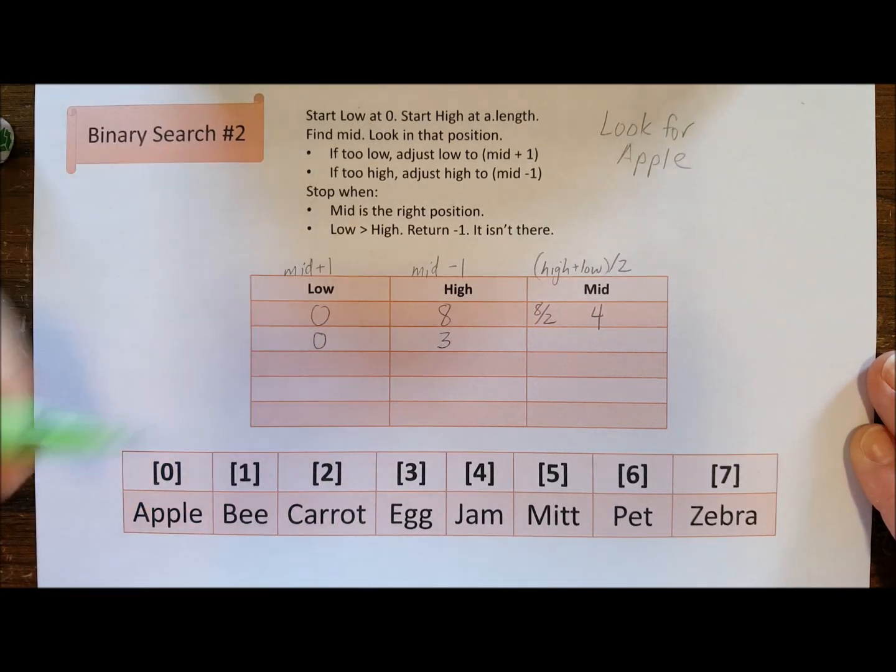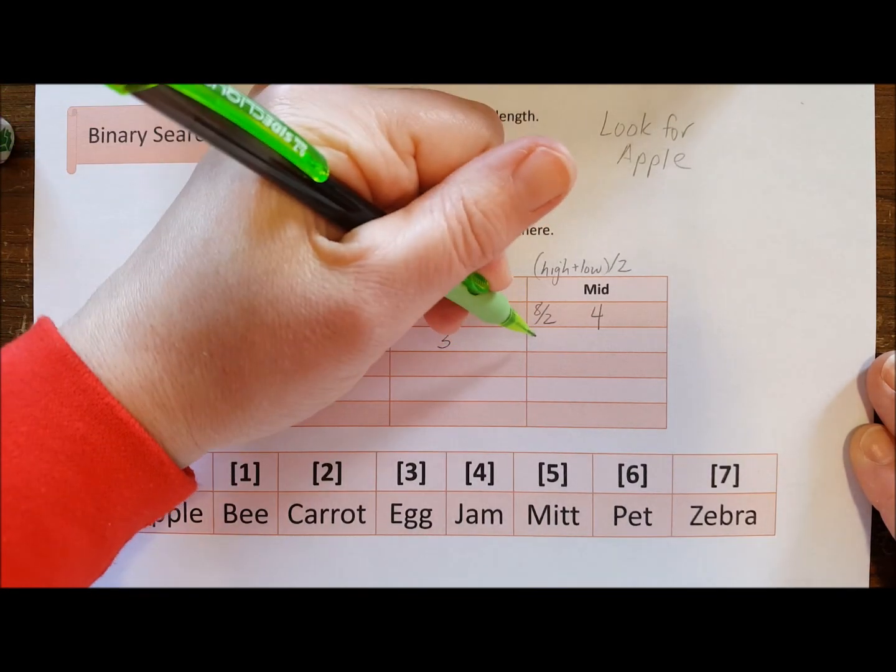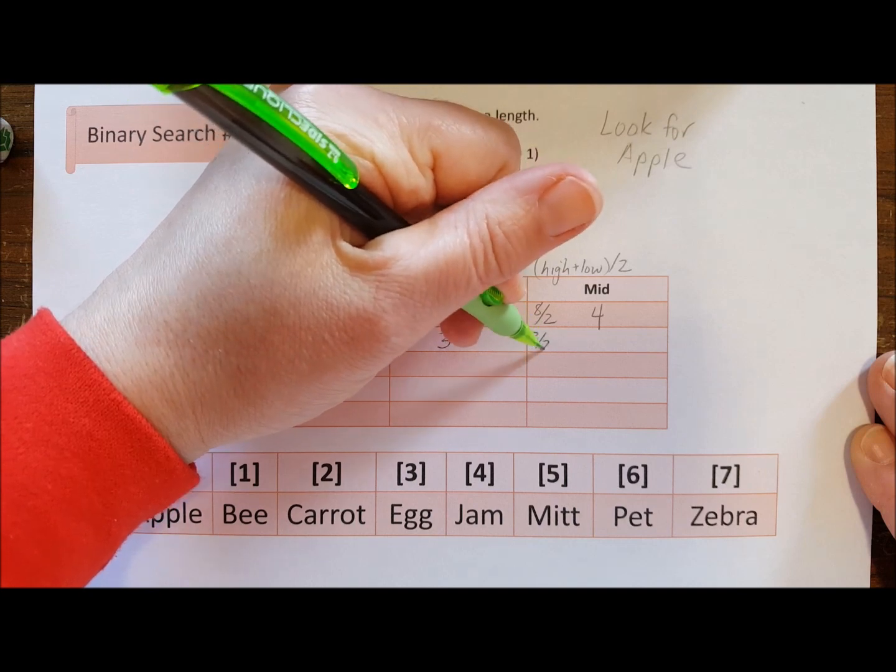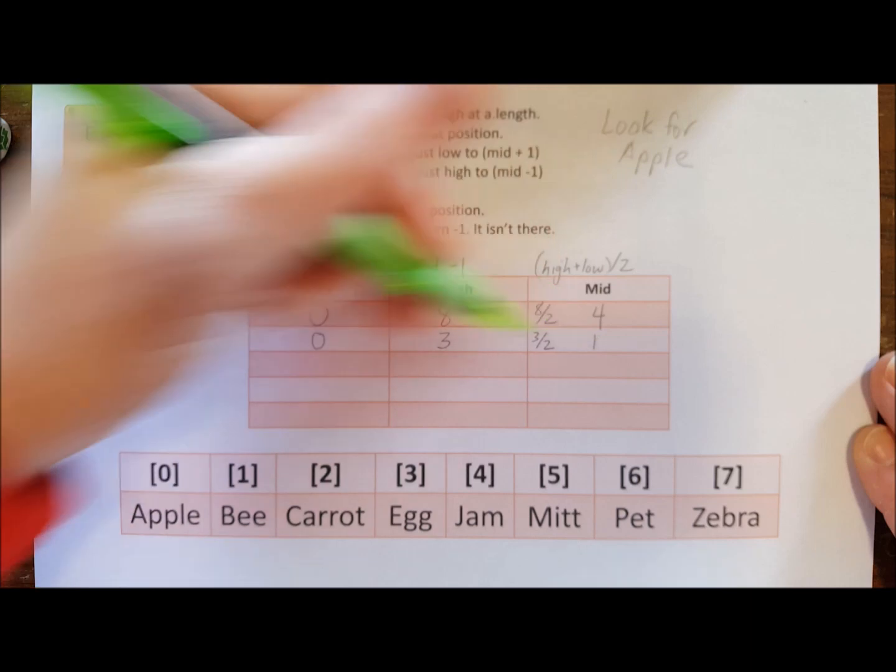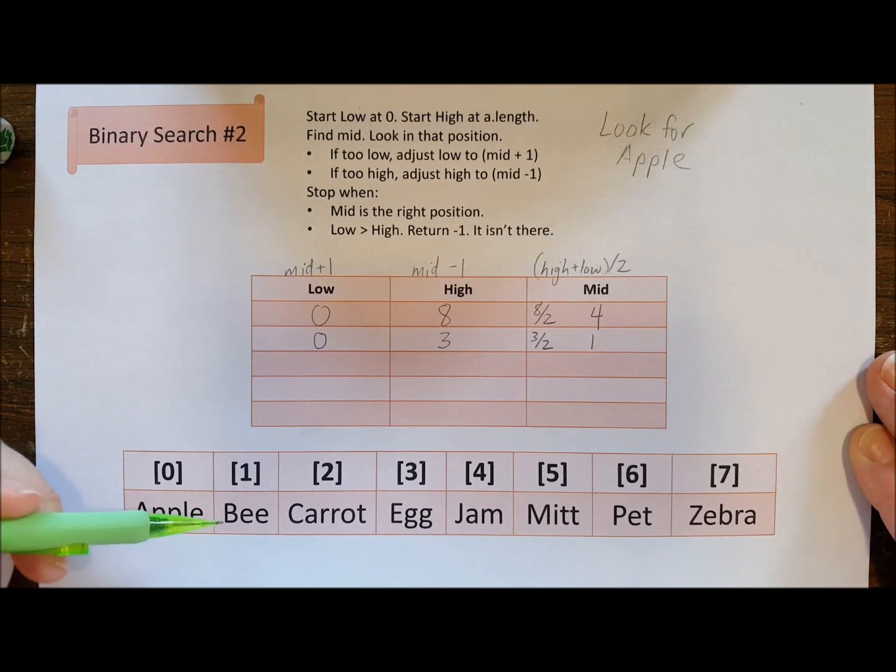It wasn't too low so we just copy that down again. Now we add the two numbers together, we're going to get three, we're going to divide it by two. Three divided by two is one. So I'm going to go look at spot one.